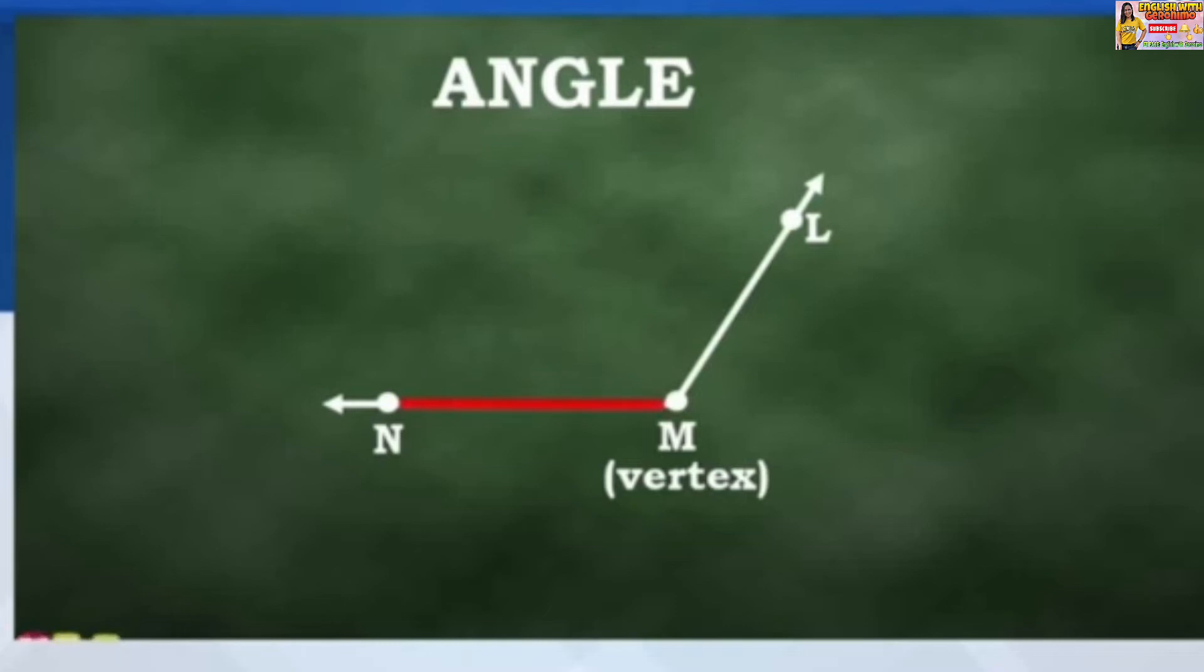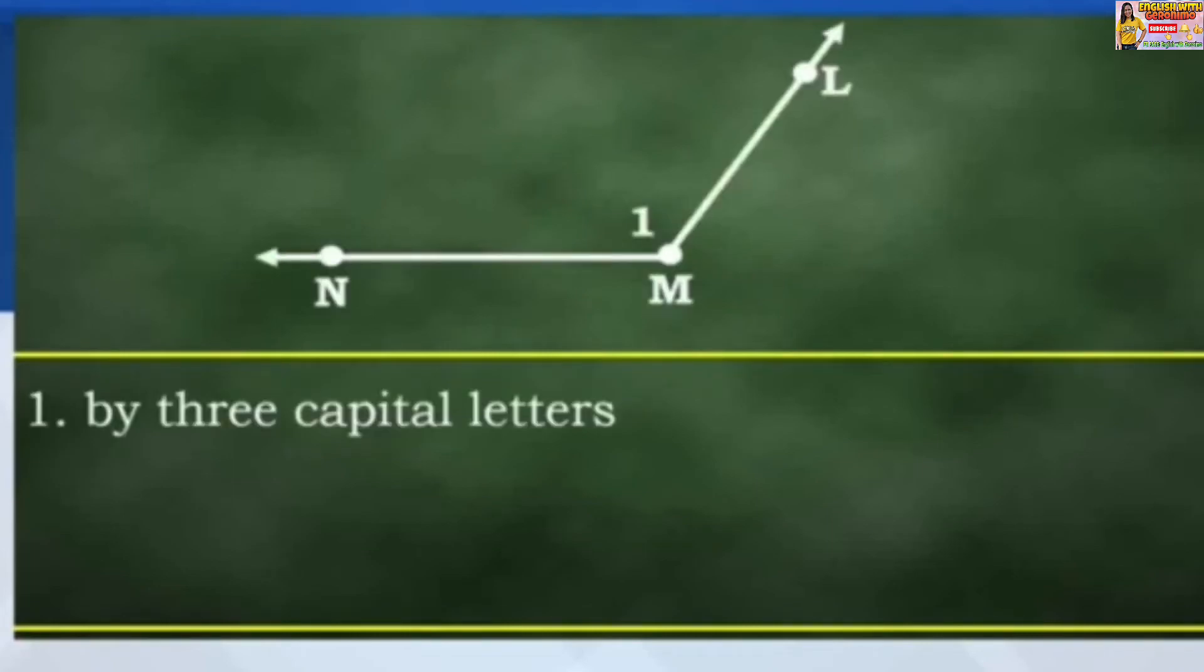The sides of an angle are two non-collinear rays. An angle can be named in three different ways. By three capital letters. Example: angle LMN or angle NML.